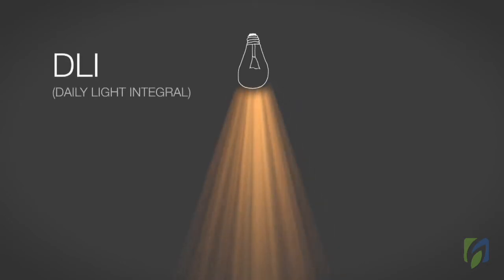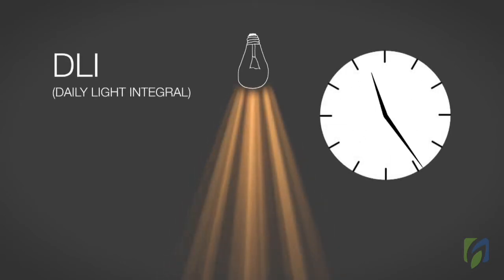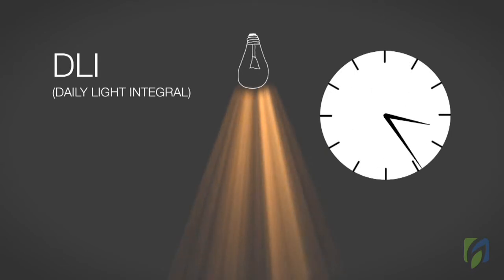Two, DLI, or daily light integral, is the cumulative amount of light delivered to the plants each day.